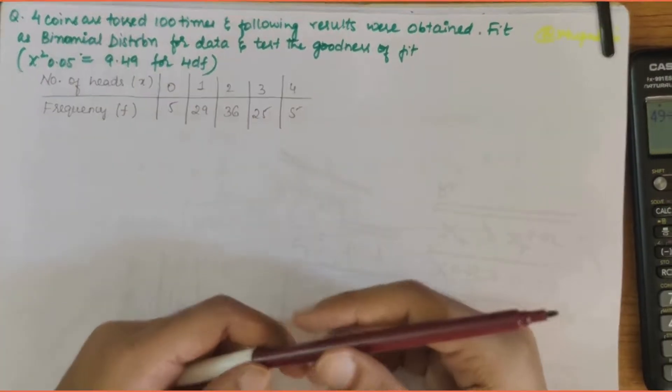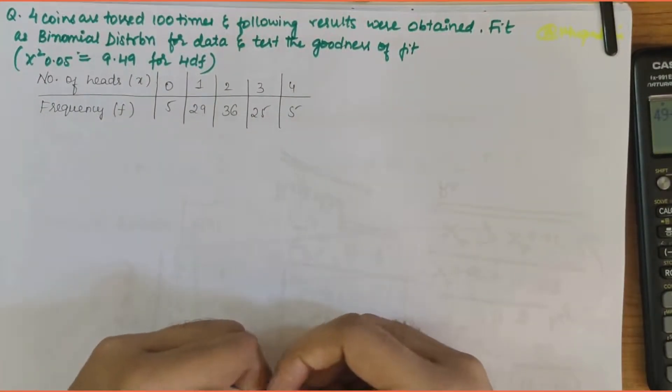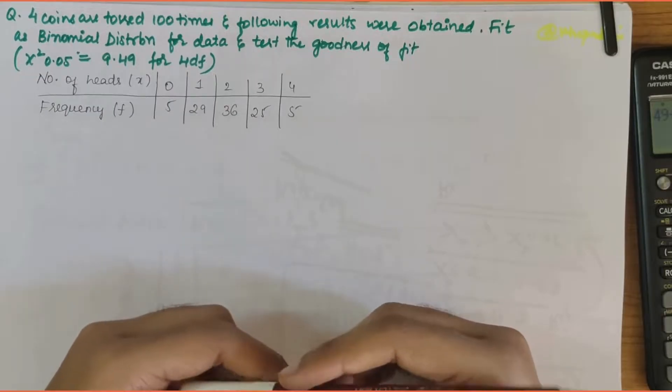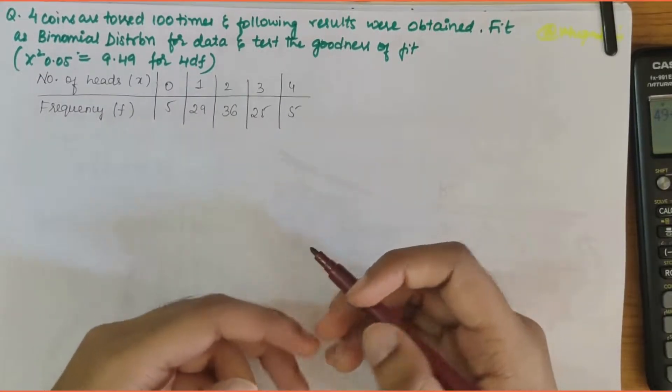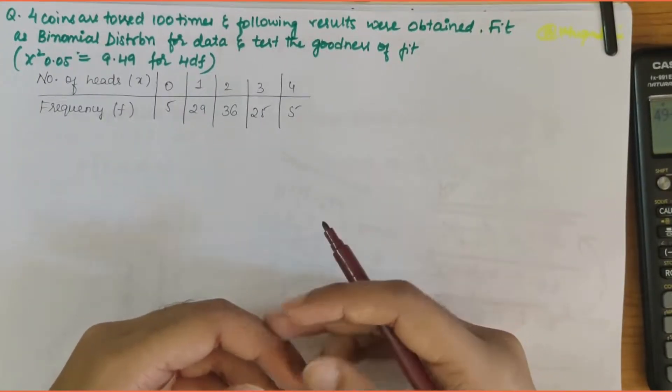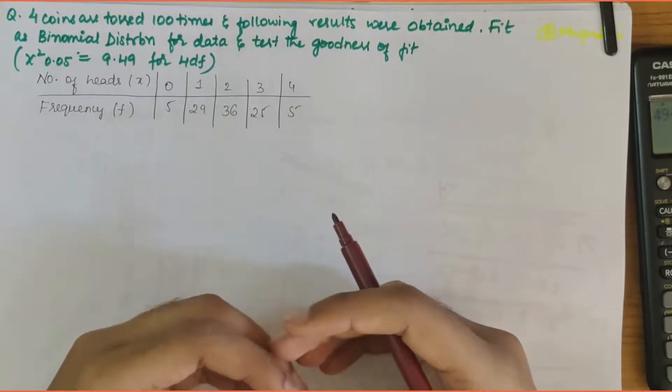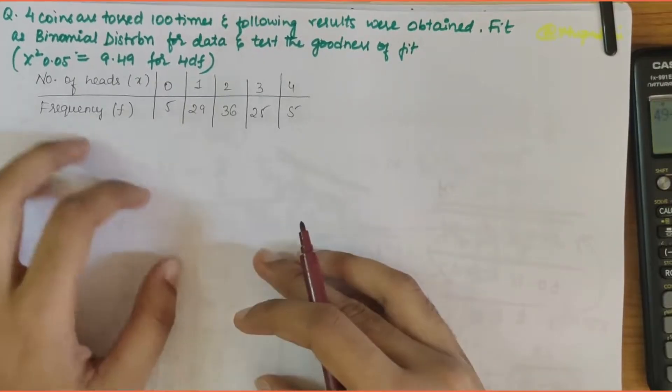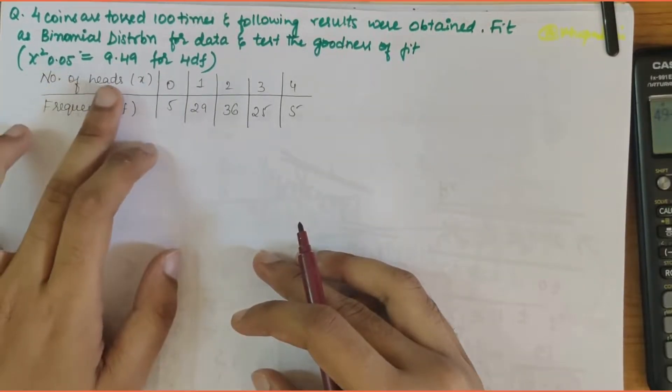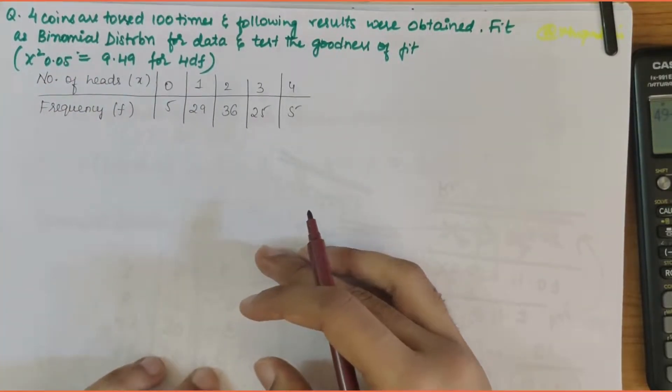In this video we'll be solving a numerical related to the chi-square distribution. The problem statement says that four coins are tossed 100 times and the following results were obtained. We have to fit a binomial distribution for the data and test the goodness of fit.